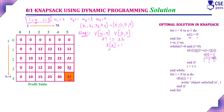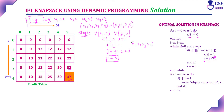Now, j equals j minus w[i]: j was 5, and the weight of the fourth object is 2, so j = 5 minus 2 = 3. The remaining capacity is now 3. Then i equals i minus 1: i was 4, so now i equals 3. The current selection state is x1=0, x2=0, x3=0, x4=1. Now considering i equal to 3, we apply the next step — the loop continues since the condition is still true.